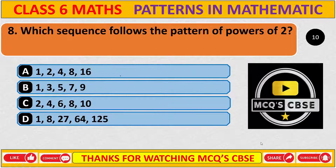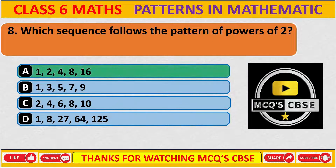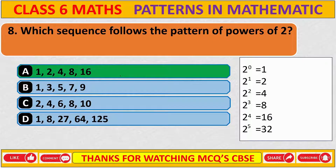Which sequence follows the pattern of powers of 2? The correct answer is A. It follows the pattern power of 2: 2 to the power 0 is 1, 2 to the power 1 is 2, 2 to the power 2 is 4, 2 to the power 3 is 8, 2 to the power 4 is 16, and 2 to the power 5 is 32.